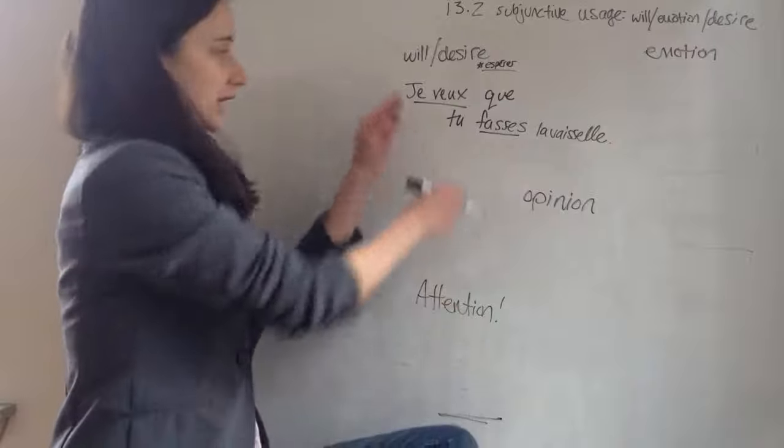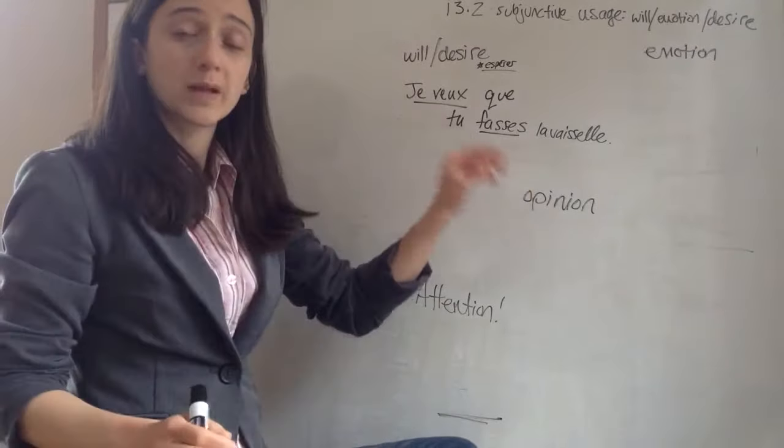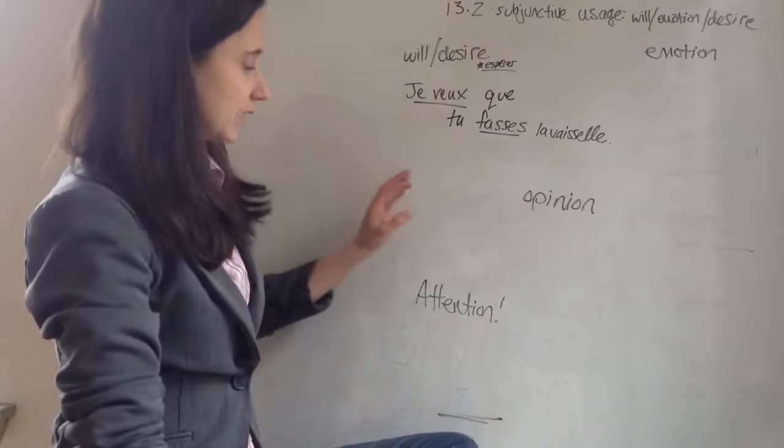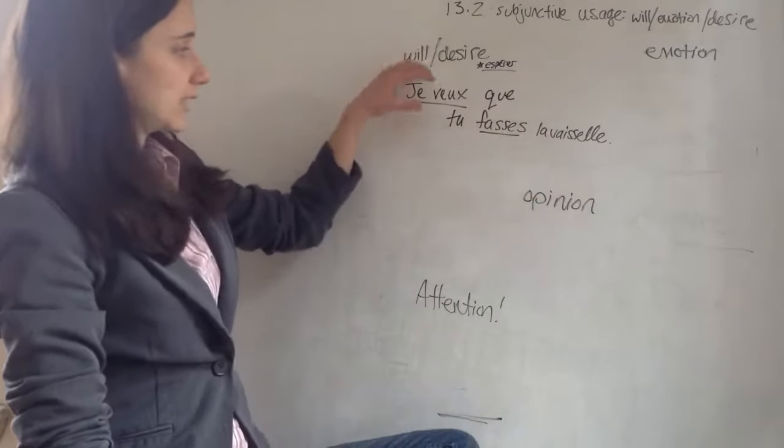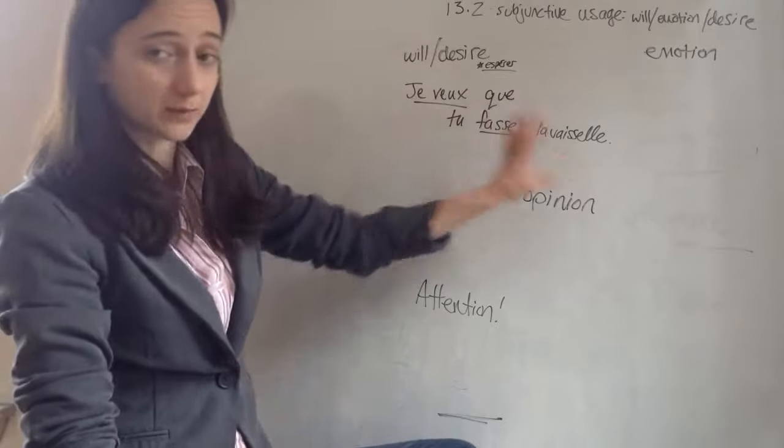So we have two different subjects, je and tu. We have two different clauses. Je veux, I want, and then we have you do. So we have the subject verb here, we have another subject verb here.